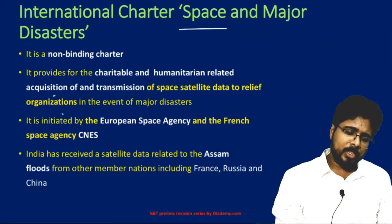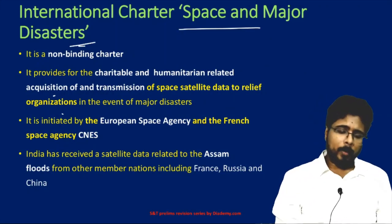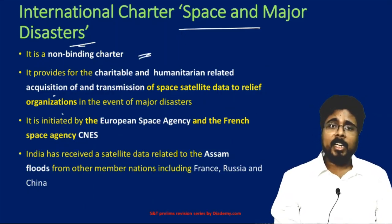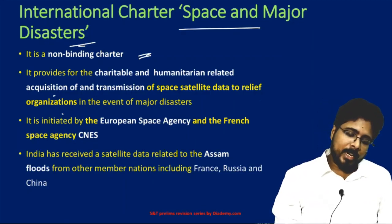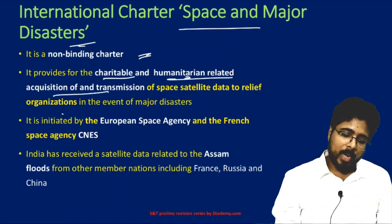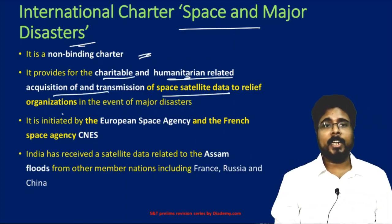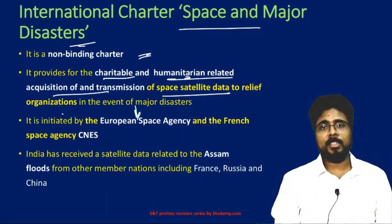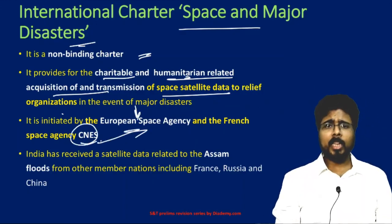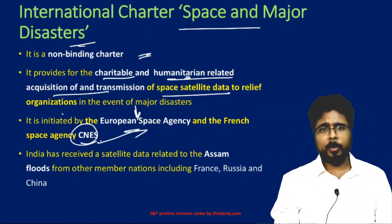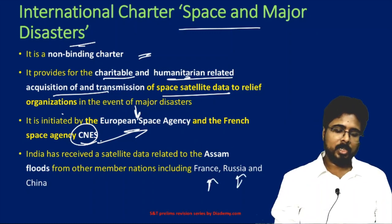First one: International Charter for Space and Major Disasters. This is a non-binding charter where, when there is a disaster in a member country, the international agencies will share their satellite data with that country for humanitarian aid. It provides data for charitable and humanitarian acquisition and transmission of space data to relief organizations in the event of a major disaster. It was initiated by the European Space Agency, ESA, and the French Space Agency, CNES. India has received data from member countries like France, Russia, and China.